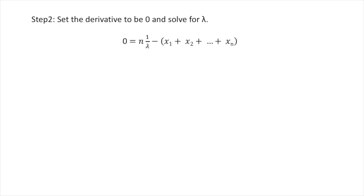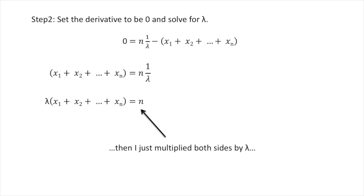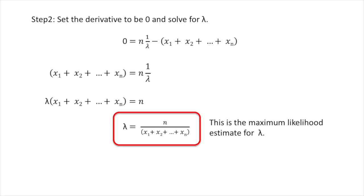Now we move on to step two: set the derivative to be zero and solve for lambda. We add x sub 1 plus x sub 2 plus all the way to x sub n to both sides, causing the term to cancel out on the right side of the equal sign. Then we multiply both sides by lambda. And lastly, we divide both sides by x sub 1 plus x sub 2 plus all the way to x sub n. This is the maximum likelihood estimate for lambda.